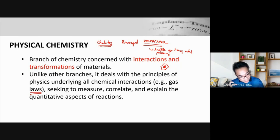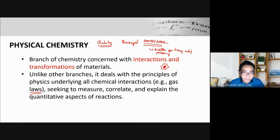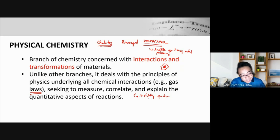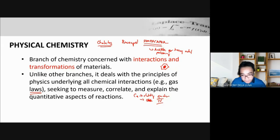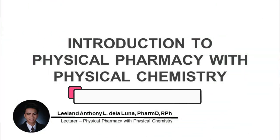EDTA is also a chelating agent — it chelates clotting factors, especially calcium, which is clotting factor number four. By chelating calcium from the blood, EDTA prevents blood from coagulating. So EDTA removes calcium from your blood, making it difficult for the blood to clot — that's how it works as an anticoagulant.